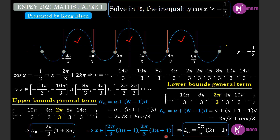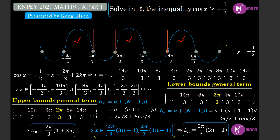We can now deduce the general formula for all values of x satisfying the inequality. It is a closed interval from the lower bound to the upper bound: from 2π/3 times (3n minus 1) to 2π/3 times (3n plus 1), for all n in the integers. Verification for n equal to zero: lower bound is negative 2π/3, upper bound is 2π/3. For n equal to 1: upper bound is 8π/3, lower bound is 4π/3 — both match our earlier cases. This formula works for all integer values of n.